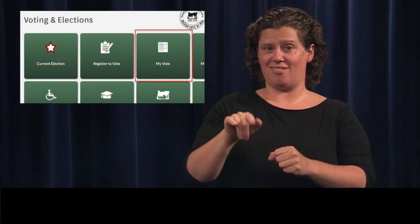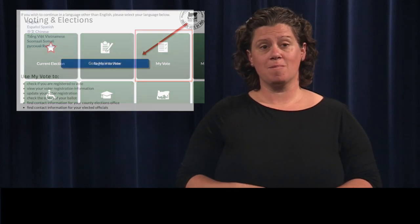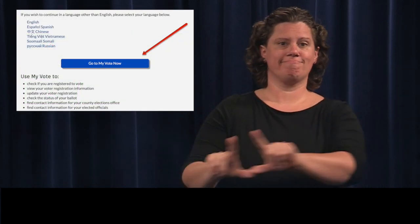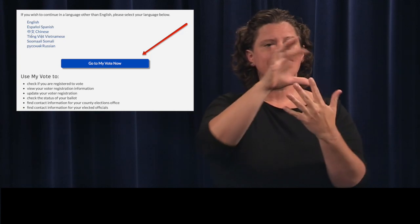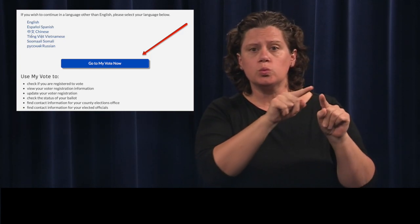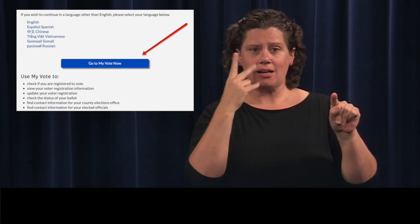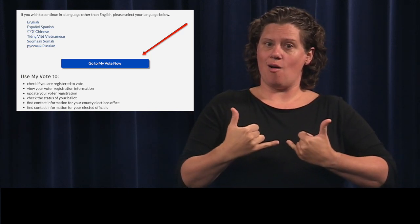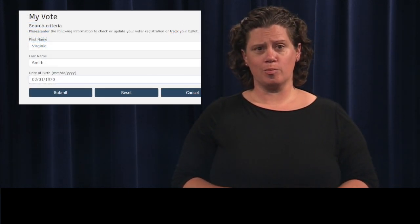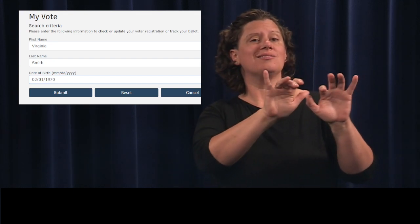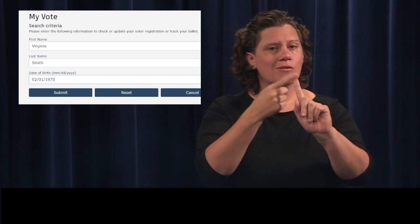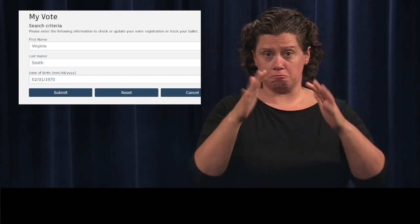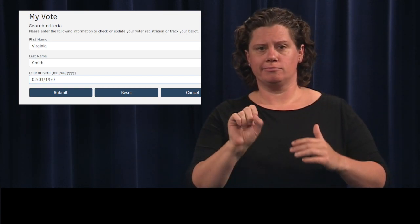Click on My Vote. The My Vote page will appear. Listed here are all the tasks you can perform in My Vote. Click the button Go to My Vote now. Enter your first and last name and date of birth, then click Submit.